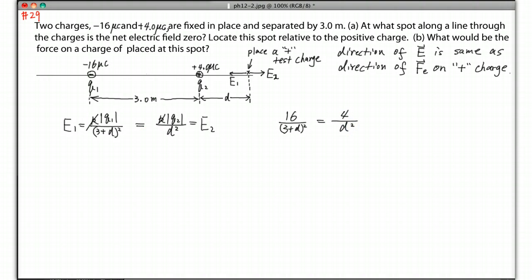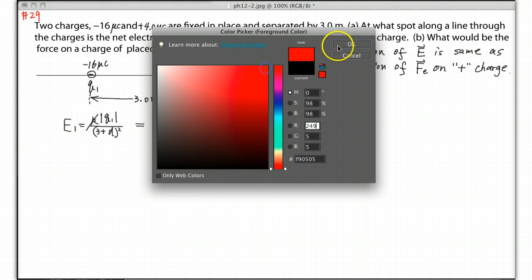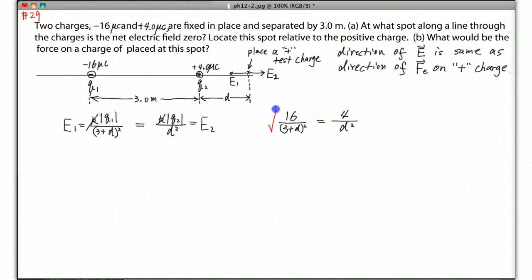Now to solve this equation, you can do cross multiplication, but it's actually easier if you take a square root on both sides. So you should get 4 over (3+D) and then you get 2 over D. Then you can do cross multiplication, or you can even guess and check.